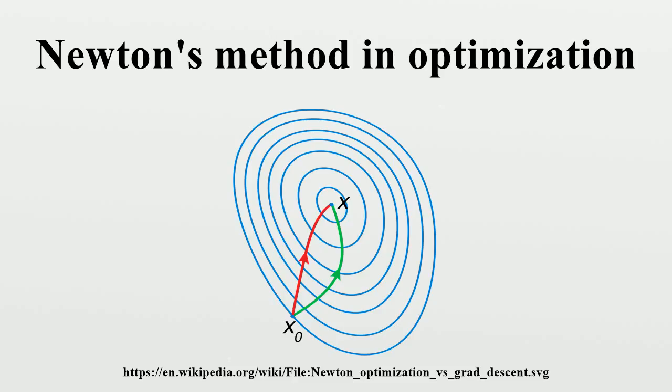There also exist various quasi-Newton methods, where an approximation for the Hessian is built up from changes in the gradient. If the Hessian is close to a non-invertible matrix, the inverted Hessian can be numerically unstable and the solution may diverge.